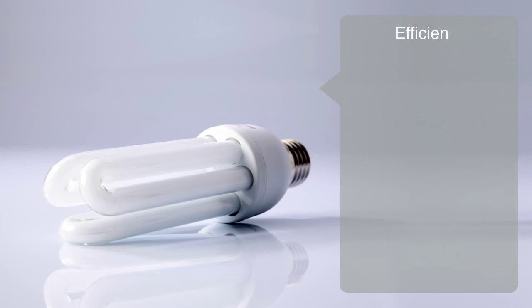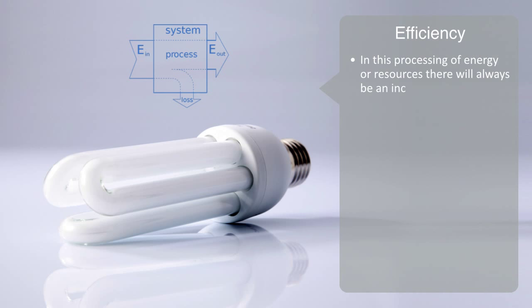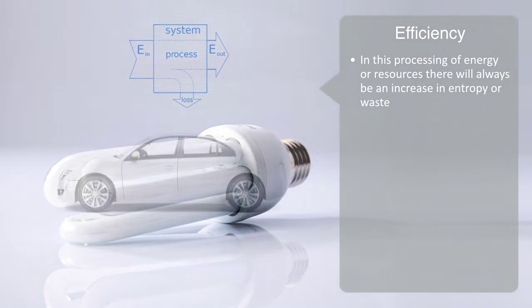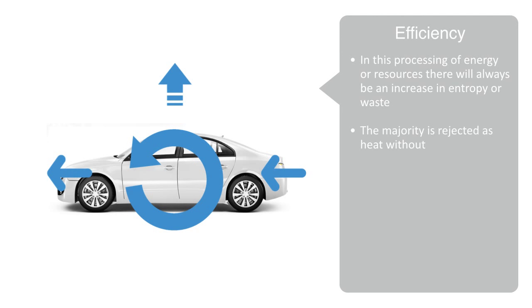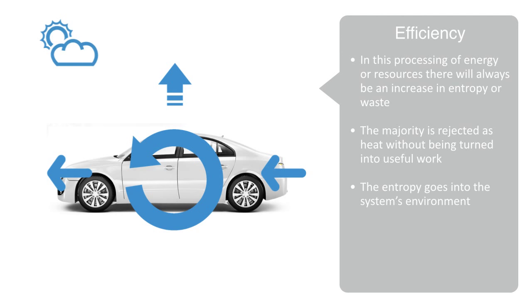All systems operate at some degree of efficiency, and efficiency is a central concept in engineering. The second law of thermodynamics tells us that in this processing of energy and resources there will always be an increase in entropy. That is to say, when we run a technology system it will produce some waste product that either remains in the system degrading its functionality over time, or gets exported to its environment. When I operate my car, only about 25 to 30 percent of the energy released by the fuel is used to move the vehicle. The vast majority is rejected as heat without being turned into useful work, and this entropy must be exported from the system or else it will damage its functioning.